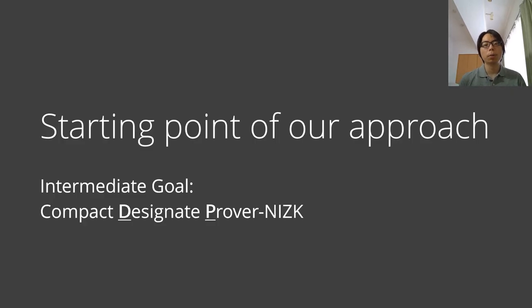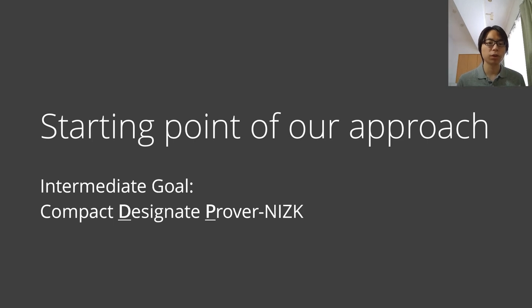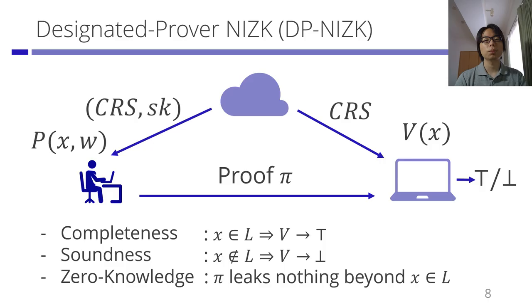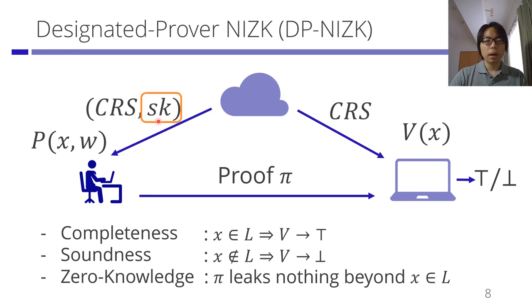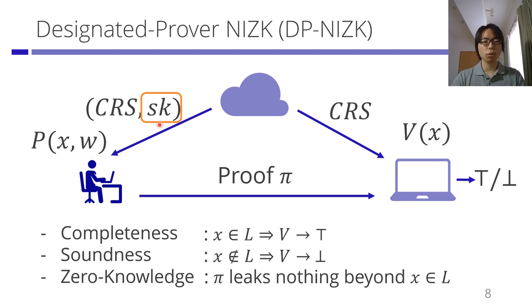We will now explain our approach. As an intermediate goal, we will first construct a compact designated prover NIZK. This is not a CRS NIZK, but we will show later how to compile this designated prover NIZK in a non-black-box manner into a CRS NIZK. In a designated prover NIZK, the trusted setup provides the prover with a secret key, so the system is designated to the sole prover who possesses this secret key. However, the proof itself is publicly verifiable.